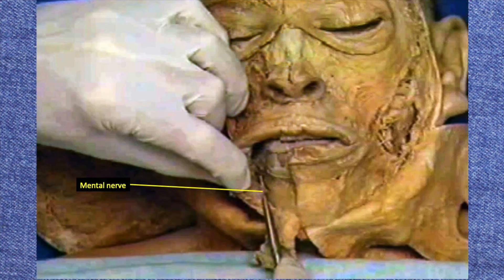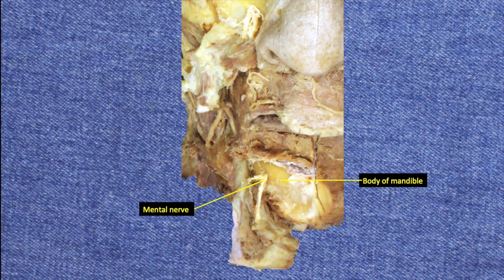The final nerve supplying the face with sensation is the mental nerve, a terminal branch of the mandibular division of the trigeminal nerve. The mental nerve comes onto the face by exiting from the mental foramen in the body of the mandible — and yes, it is called the mental nerve because it is difficult to have a deep thought without grabbing your chin; think of Rodin's "The Thinker." In older adults who lose their bottom teeth, much of the bone of the mandible above the foramen is resorbed and the foramen comes to lie directly opposite the upper teeth, resulting in intense pain with chewing and leading to severe malnutrition and loss of body fat.